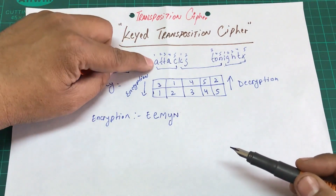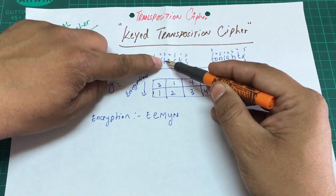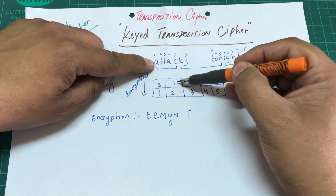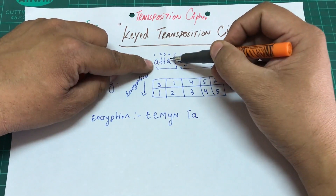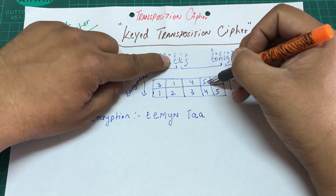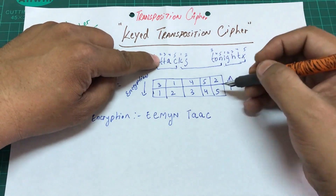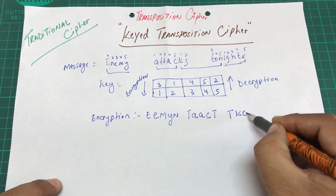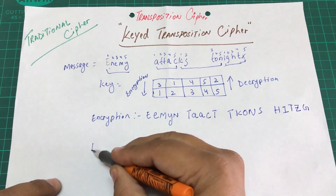Continuing the encryption for the next block: the third letter 't' becomes my first letter, the first letter 'a' becomes my second, the fourth letter 'a' becomes my third, the fifth letter 'c' becomes my fourth, and the second letter 'p' becomes my fifth. Writing them all down, we get the encrypted output for each block.